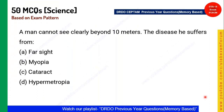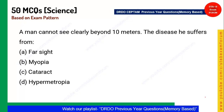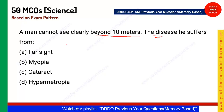First question from physics: A man cannot see clearly beyond 10 meters — what disease does he suffer from? The answer is myopia. Myopia is the eye disease where you cannot see distant objects clearly. The opposite is hypermetropia, where a person is not able to see nearby things clearly. Older people are mostly affected by hypermetropia.